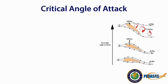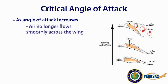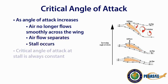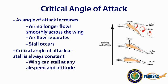The critical angle of attack is the point at which, as the angle of attack increases, air will no longer flow smoothly over the wing. When this happens, the airflow separates from the surface of the wing, resulting in a stall. The critical angle of attack, or the angle at which the stall occurs, is always constant for a given airfoil in a given configuration. Since the stalling point is only affected by the angle of attack, it is important to note that the wing can stall at any airspeed and any attitude.